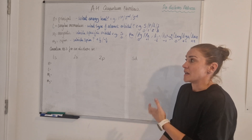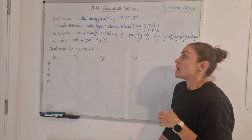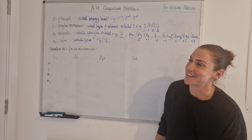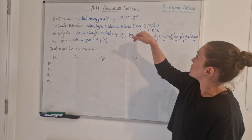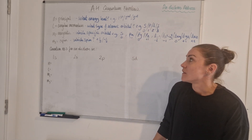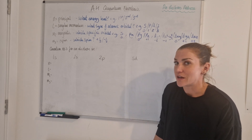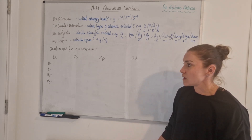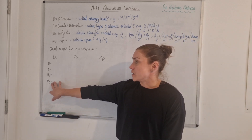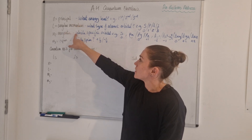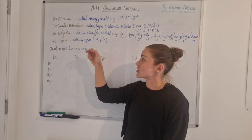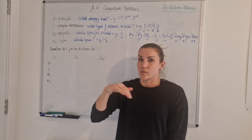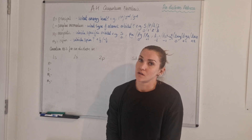The last quantum number assigned is the spin, sometimes denoted ms or just s. The spin you essentially just get to choose — either plus a half or minus a half. That's always the easy one to pick at the end. When assigning a set of quantum numbers there normally isn't only one specific right answer, unless you've been given a set of quantum numbers for an electron in the same atomic orbital, in which case the only thing that can be different is the spin number.